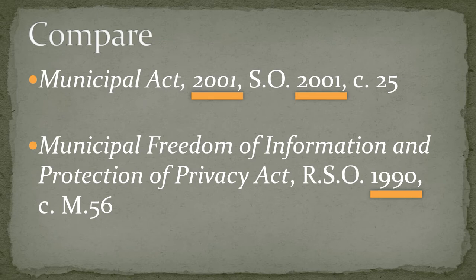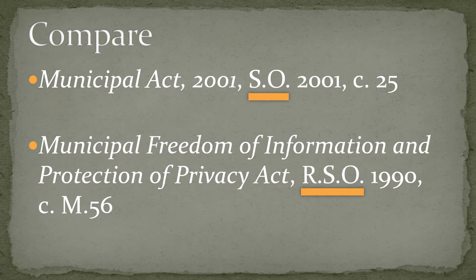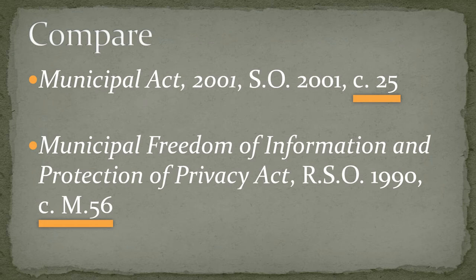Comparing these two statute references, there is a lot of information and it is presented differently in both examples. Referencing legislation is not intuitive without knowing how legislation is organized and, specifically, how it is published in print. The Municipal Act 2001 includes two references to the year — only the first is italicized. The MFIPA statute only includes one reference to the year, and it is not italicized. One statute references S.O., whereas the other references R.S.O. What does this stand for, and why is the R added for MFIPA? One of them says C.25, and one says C.M56. Are these references to highway numbers? Plumbing fittings? Are we playing bingo?